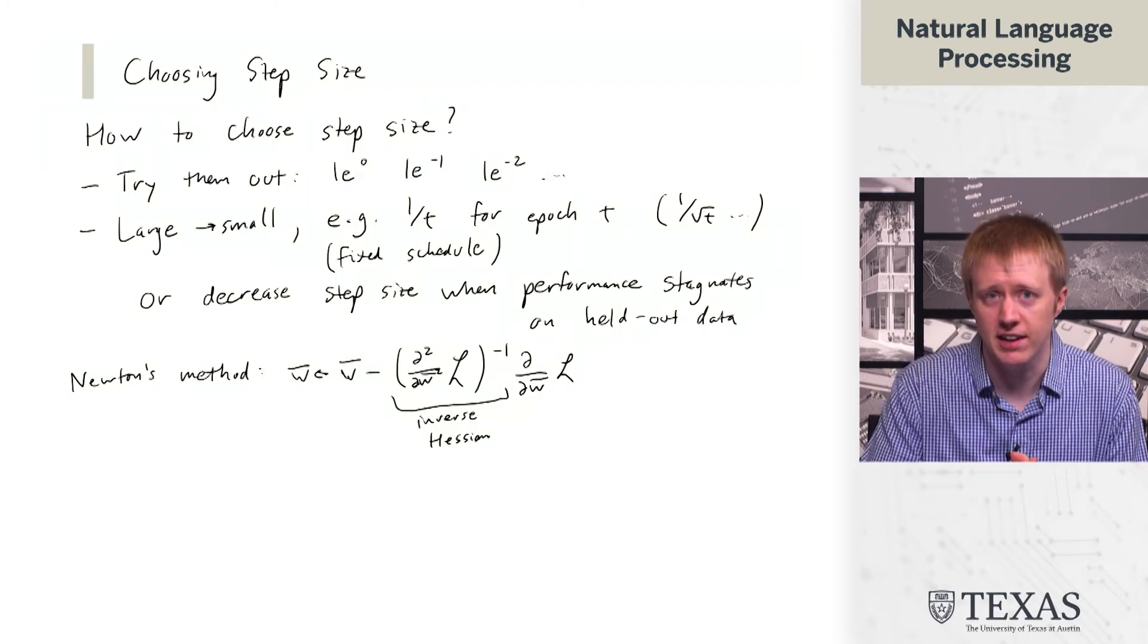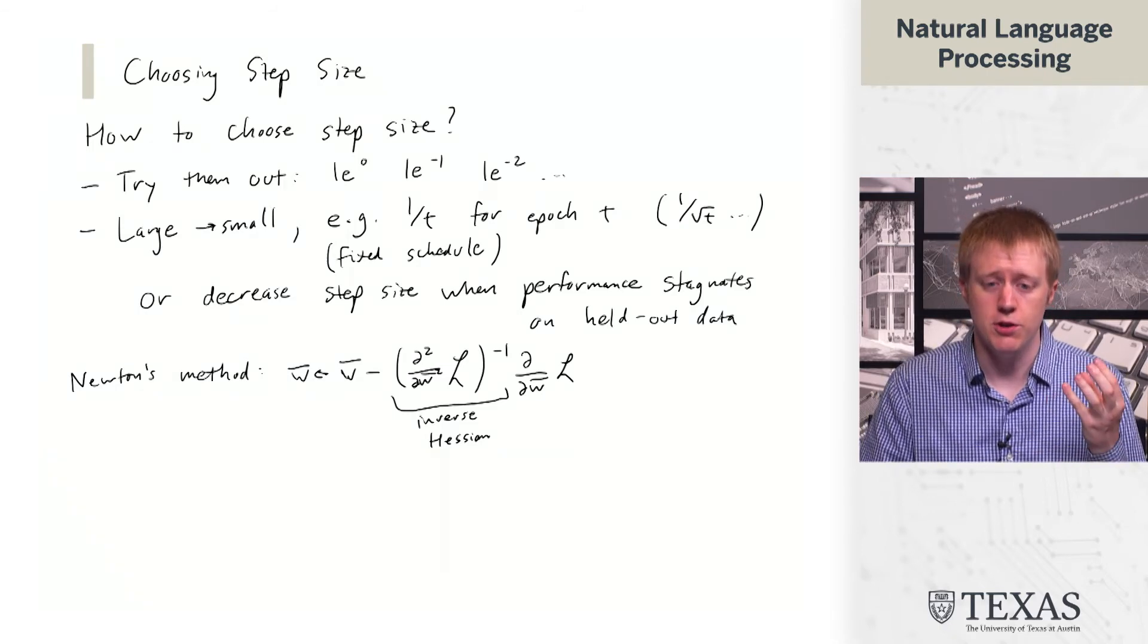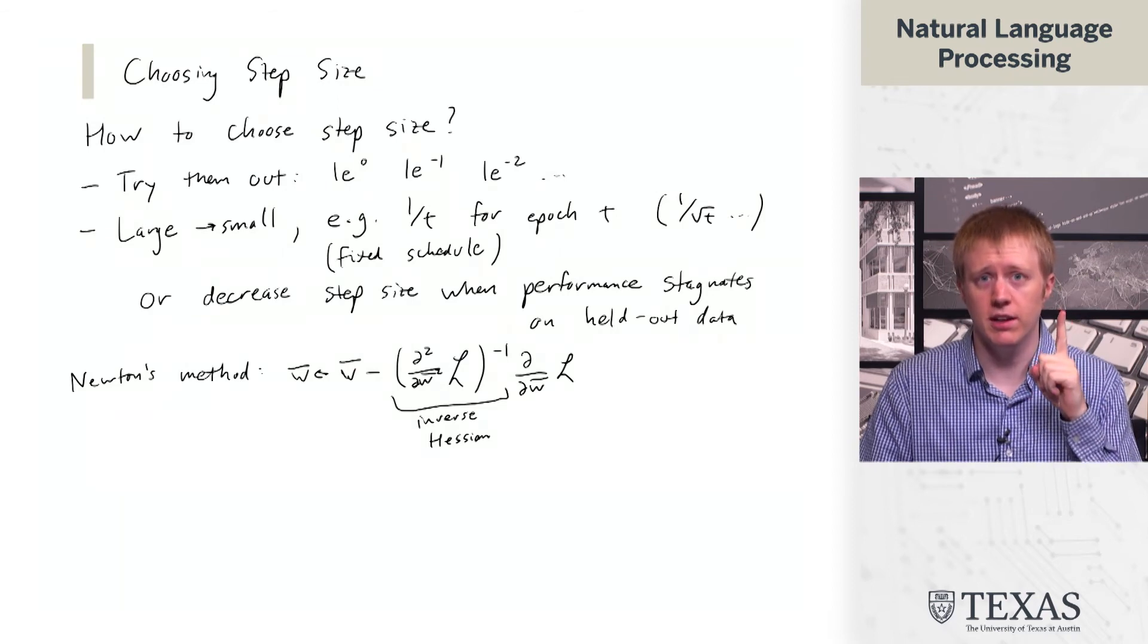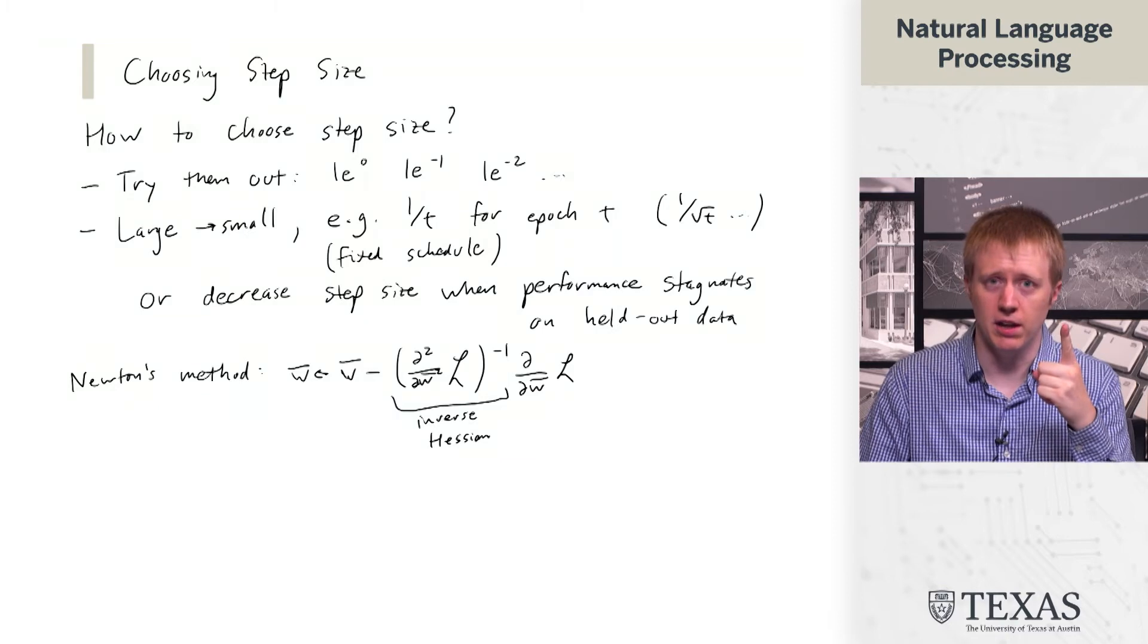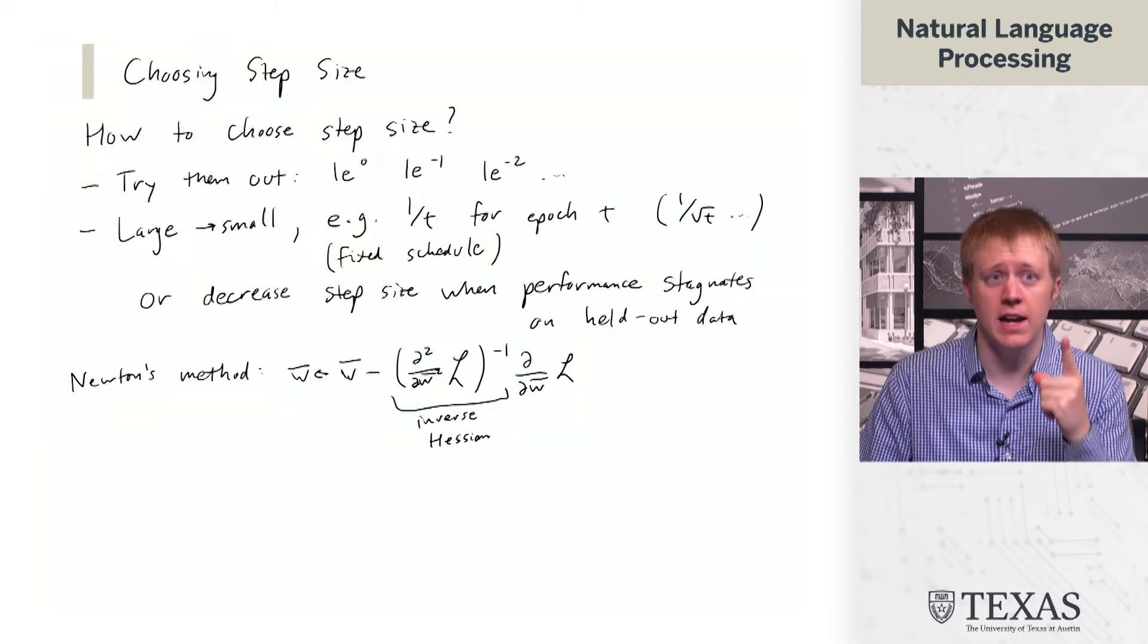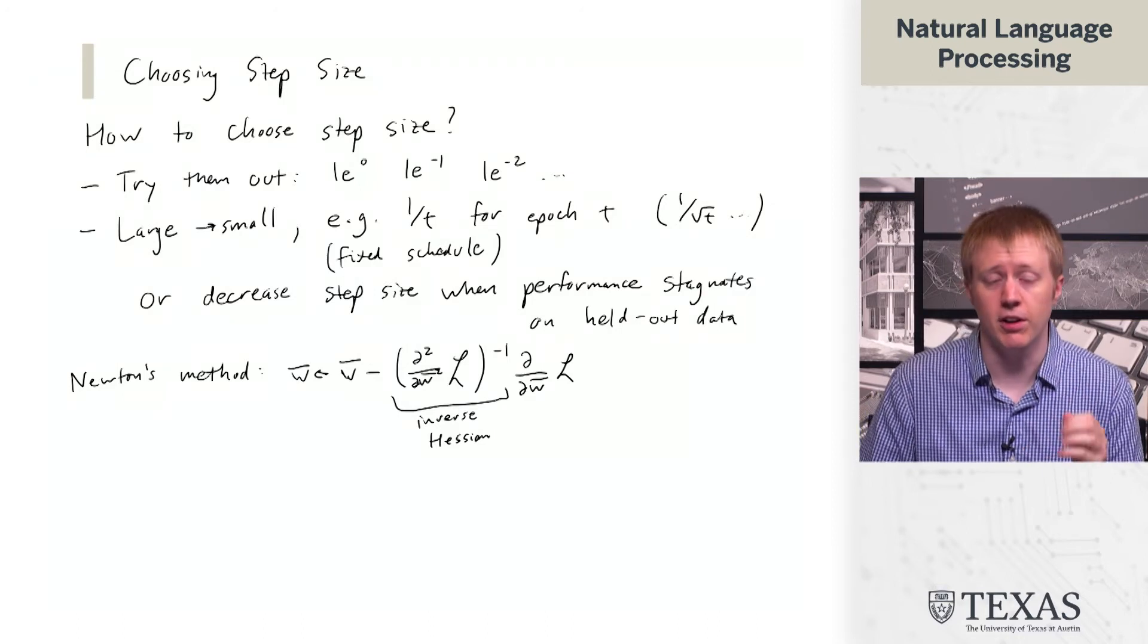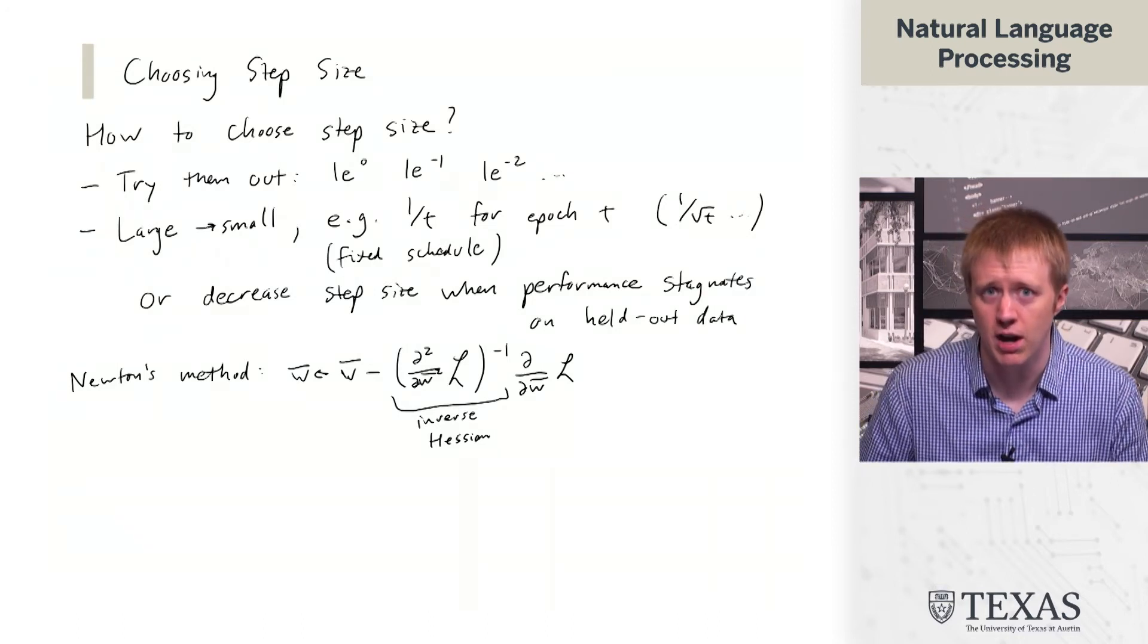One way to think about this is it's like a second order Taylor approximation. If you're optimizing a quadratic, this will allow you to take your gradient, which is locally going uphill, and based on the gradient and the second derivative, the curvature, we can immediately jump to the optimum.